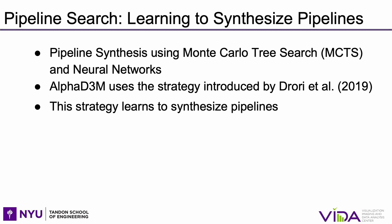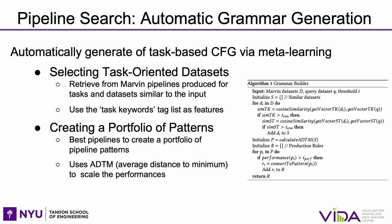The second module is the automatic generation of task-based context-free grammars via meta-learning. Manually designed context-free grammars have many limitations — notably, they may not cover all applicable rules and pipeline structures. Furthermore, to create the production rules or patterns in the grammar, a user needs to have knowledge of all available primitives for specific tasks and how they work. For large collections of primitives, this is a difficult task.